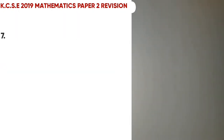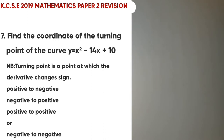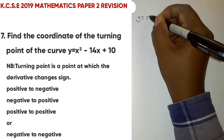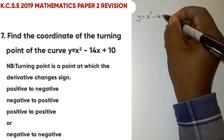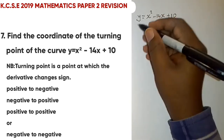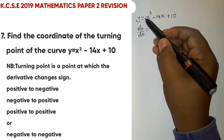Moving to question 7: find the coordinates of the turning point of the curve y = 2x² - 14x + 10. At a turning point, the derivative changes sign — either from positive to negative or negative to positive. So first we need to find the gradient function dy/dx.